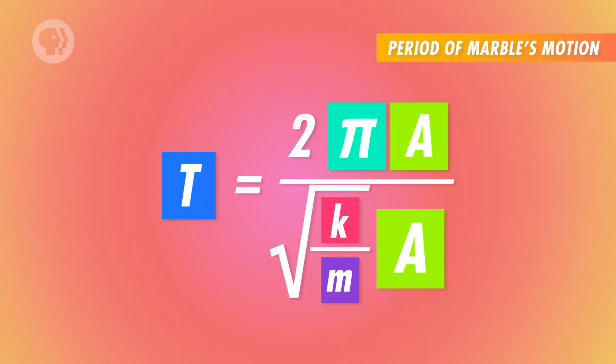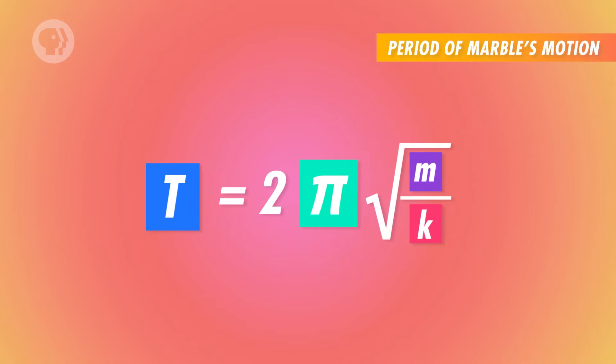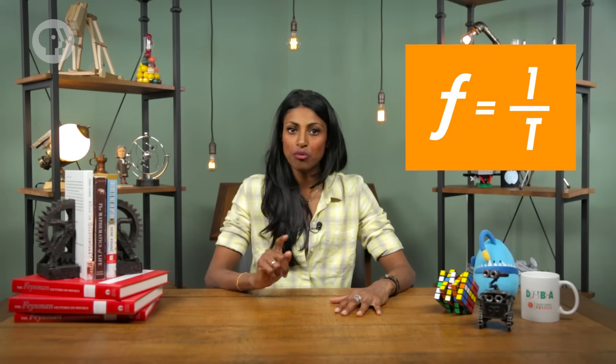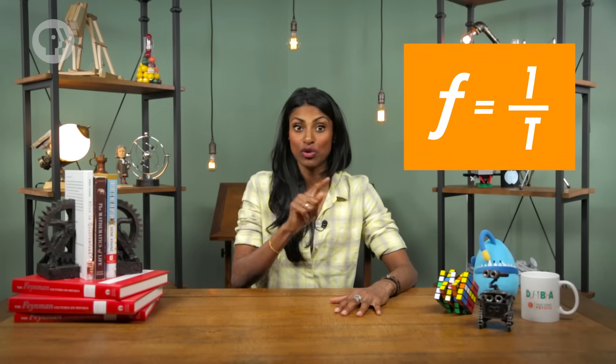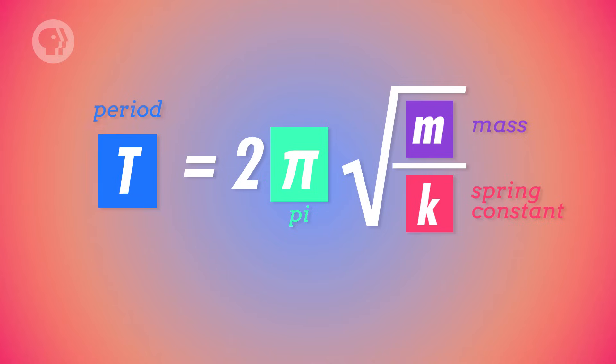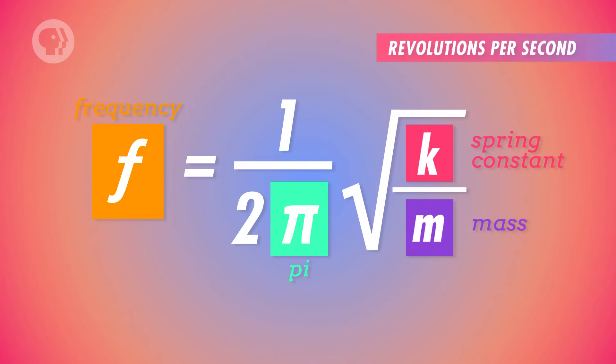So, the period of the marble's motion around the ring is equal to 2 pi times the square root of m over k. Now, we've also talked about the frequency of uniform circular motion. It's the number of revolutions the marble makes around the ring every second, and it's equal to 1 divided by the period. In this case, the frequency will also be equal to 1 over 2 pi times the square root of k over m. And that'll apply to the ball on the spring, too. Because the rules are the same!